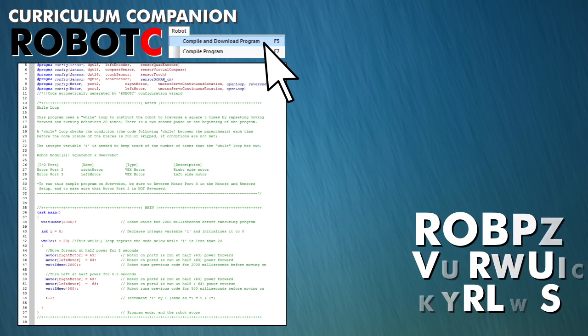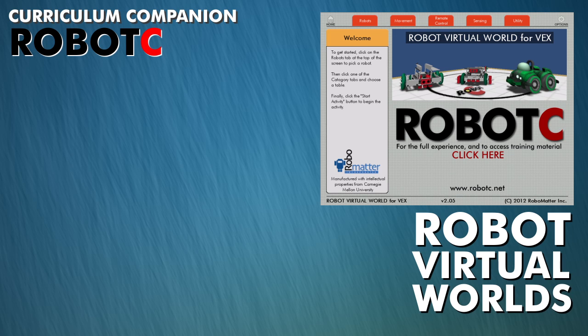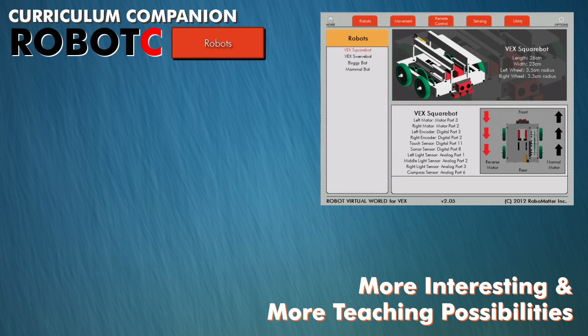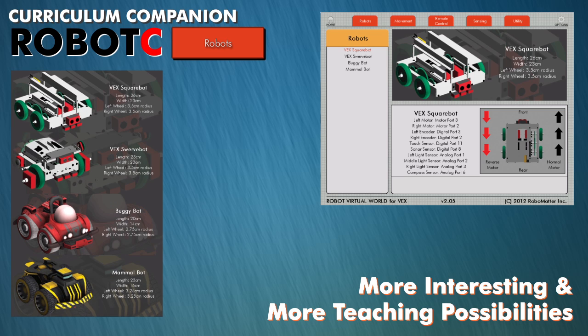Once the code is downloaded, the Virtual Worlds window appears. From here, students will start by selecting a robot. To make the teaching tool more interesting to students and provide additional teaching possibilities, both VEX Square and Swerve robots along with Fantasy robots are included.